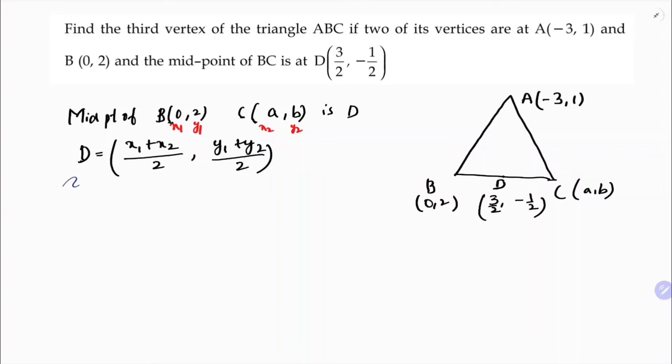So D, which is (3/2, -1/2), equals (0 + a)/2, (2 + b)/2.